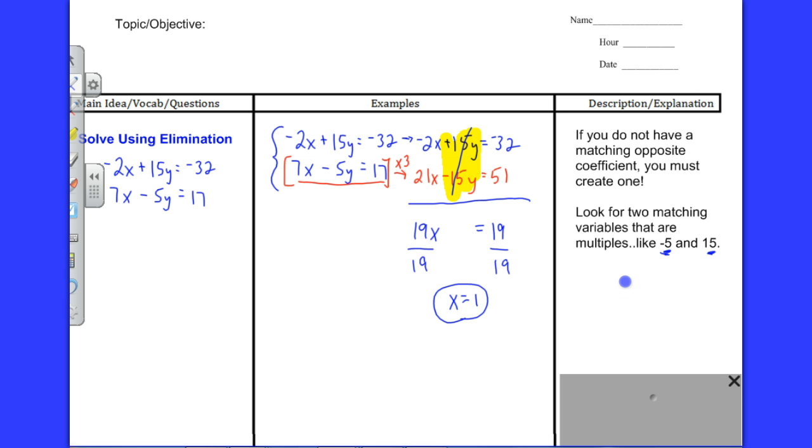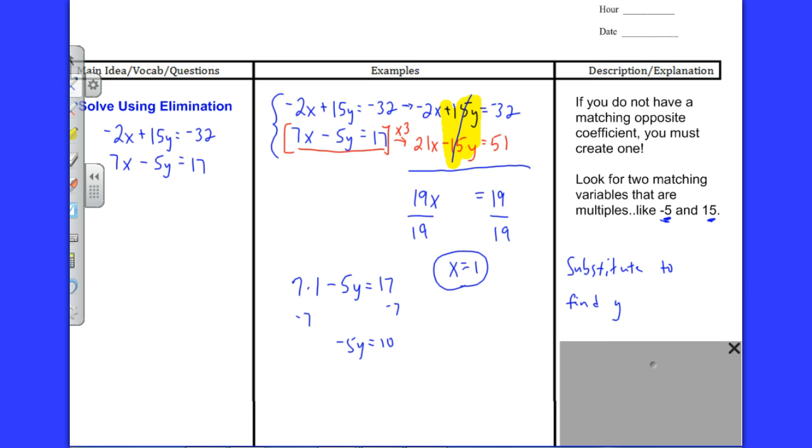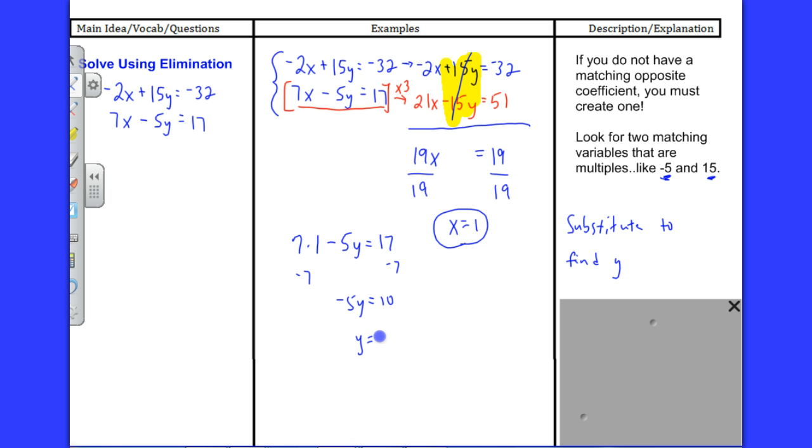Now you do have to substitute again to find y. I'm going to pick either one of the equations, it's fine, doesn't matter. I guess I'll pick the bottom one: seven x minus five y. I'm going to go seven times one minus five y equals seventeen. I'm going to solve this now. Subtract seven from both sides, I get negative five y equals ten. Divide by negative five, and that works out to be negative two. So the ordered pair one, negative two is my solution.